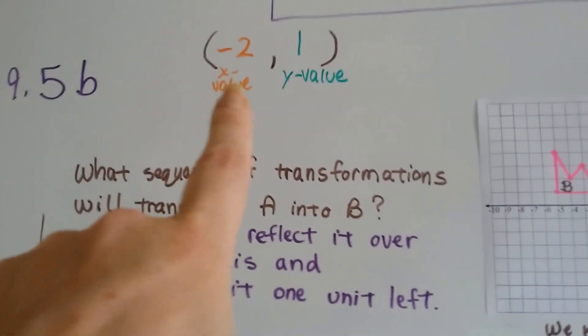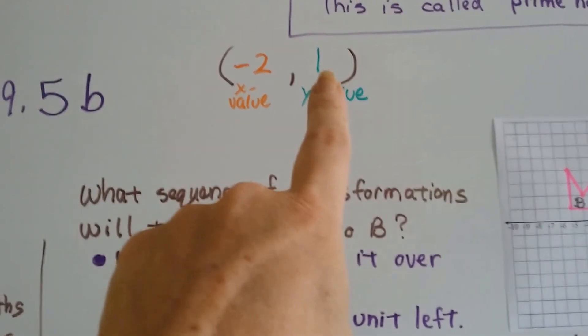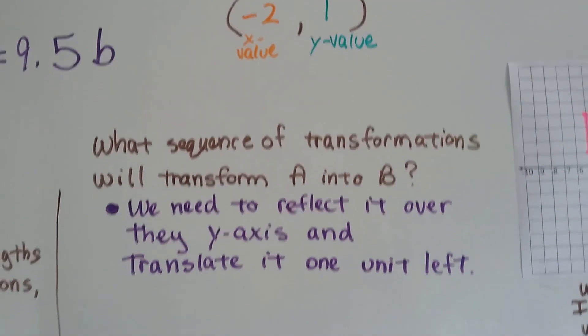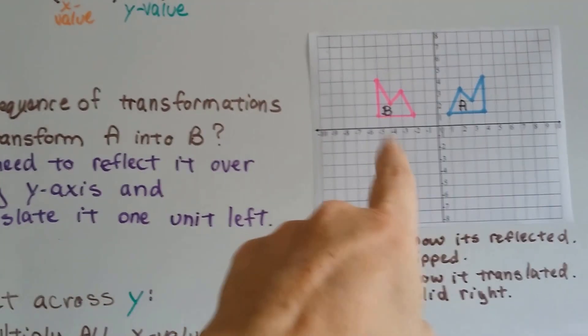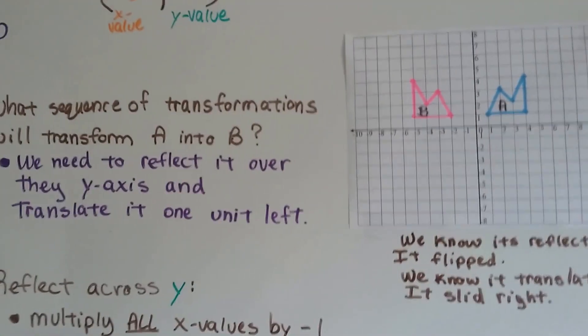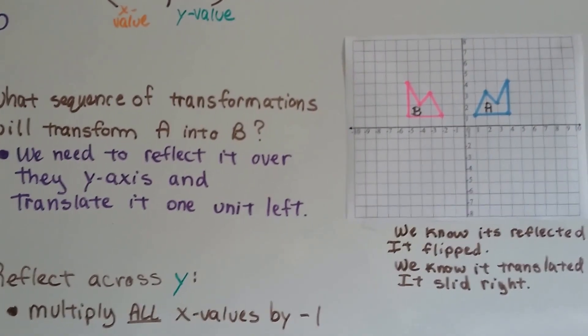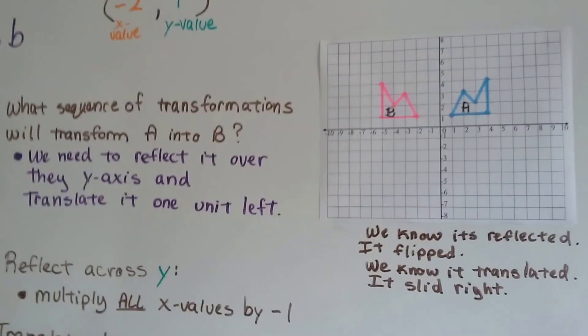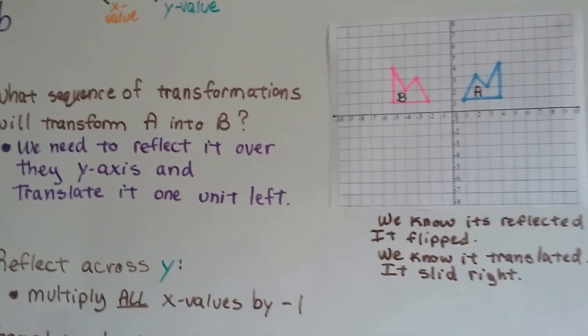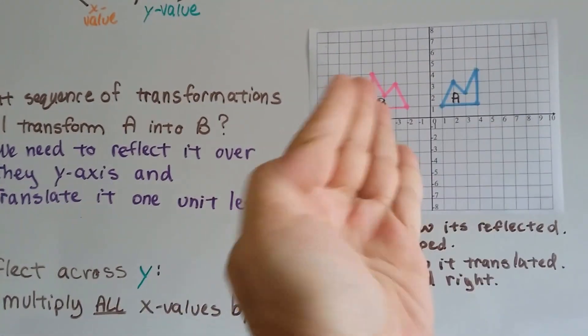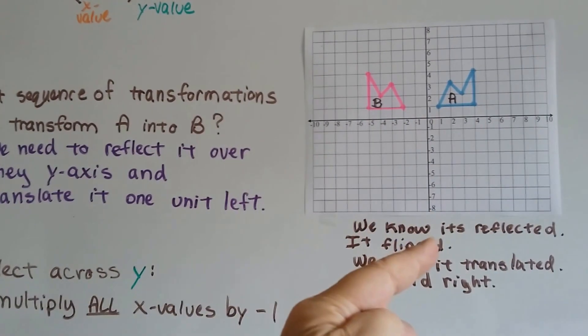Remember that the first is the x value, and the second one is the y value in the coordinate pair. And we've got two shapes, A and B. So what sequence of transformations will transform A into B? So if we started with this one, how could we get to that one?